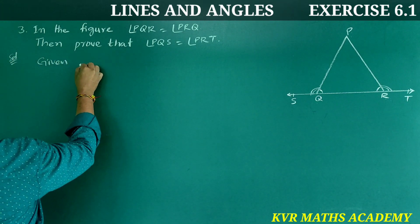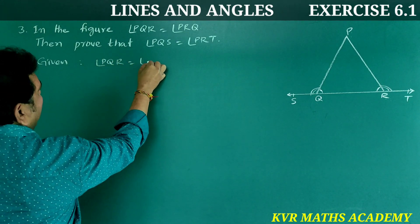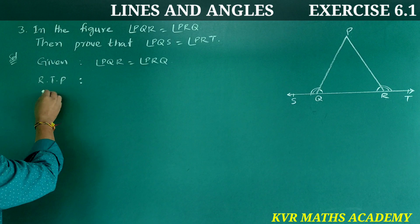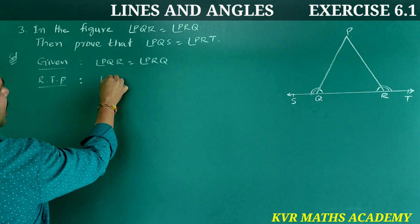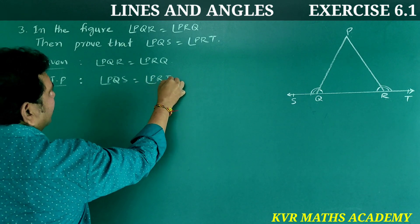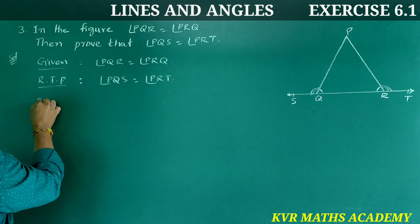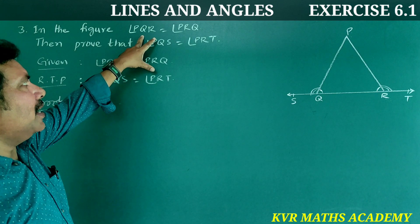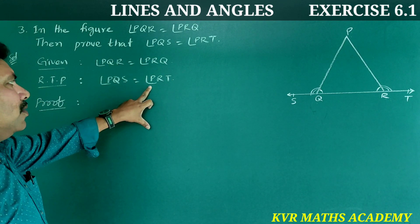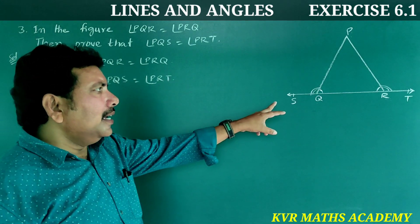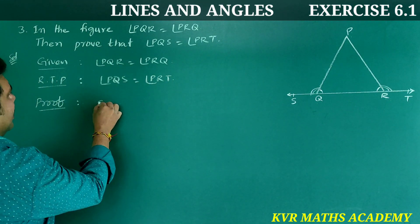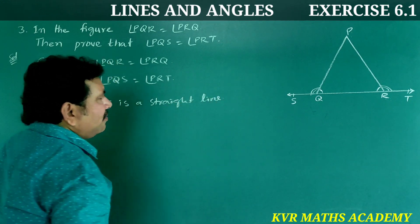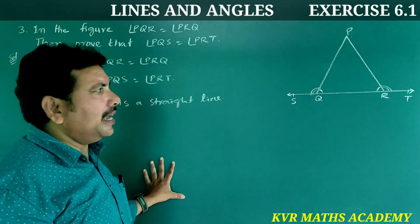Solution. Given: angle PQR is equal to angle PRQ. ST is a straight line, and the sum of angles on a straight line is equal to 180 degrees.